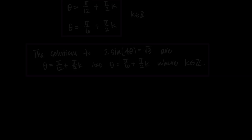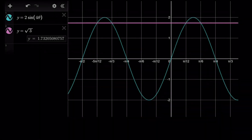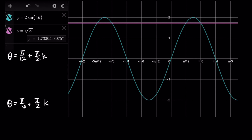Before moving to the next example, let's graph things and confirm these answers are correct. Looking at π over 12 plus π over 2 times k and π over 6 plus π over 2 times k, it can be hard to know if we got it right. One way to check is to graph the left and right sides of the equation — y equals 2 sine of 4θ and y equals square root of 3 — and look for where the two graphs intersect, since that's where the left side equals the right side. I'll put both solutions here and try some different values for k.